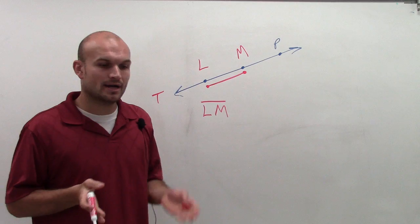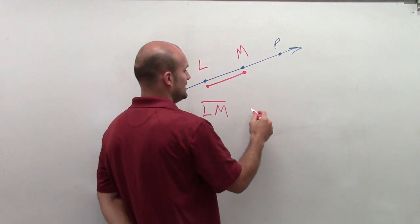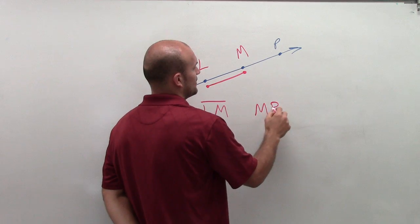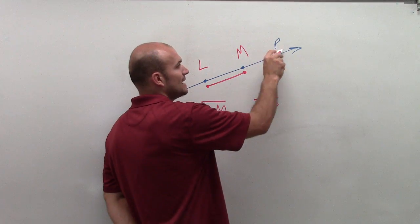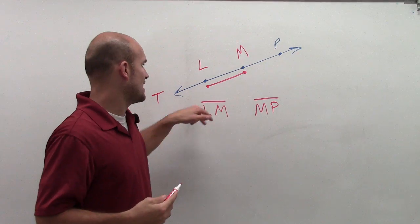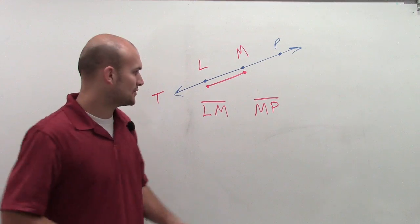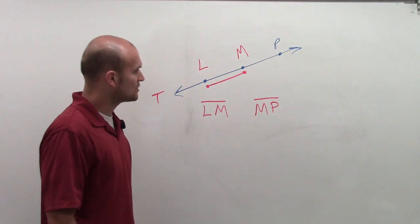What other segments could I draw? Well, I could draw a path between M and P that would have its endpoints at M and P. Remember, order doesn't matter. I could do ML or PM, but I don't need to go through all of that.